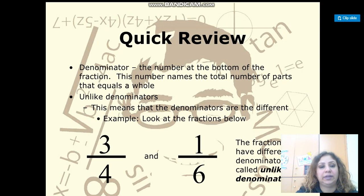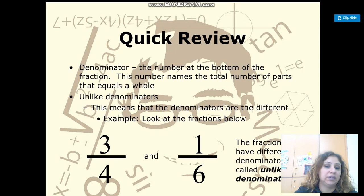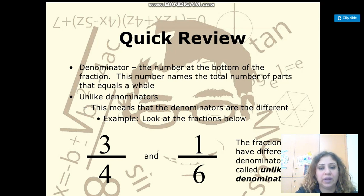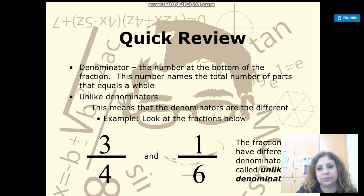Unlike denominators means that the denominators, or the bottom numbers, are different. For example, I have 3 over 4 and 1 over 6. The fractions have different denominators, called unlike denominators.